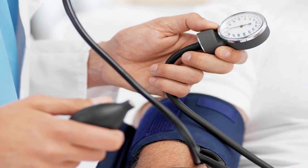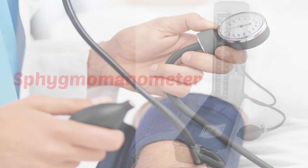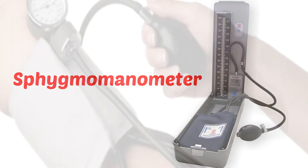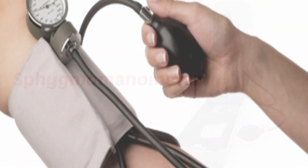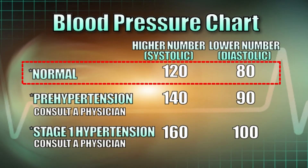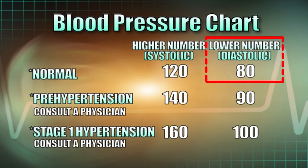Elevation of blood pressure is called hypertension. Blood pressure is measured using a sphygmomanometer. A healthy adult has a blood pressure reading of about 120 over 80 mm mercury — 120 mm systolic and 80 mm diastolic.